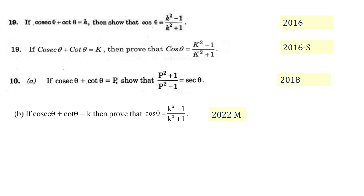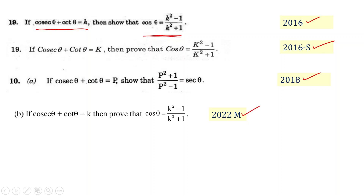If cosec theta plus cot theta equals k, then show that cos theta equals k squared minus 1 divided by k squared plus 1. This is a very important question from trigonometry — it appeared in the 2016 final paper, 2016 supplementary, and 2022 model paper. So there is a good chance it will repeat, so let's learn how to prove it.